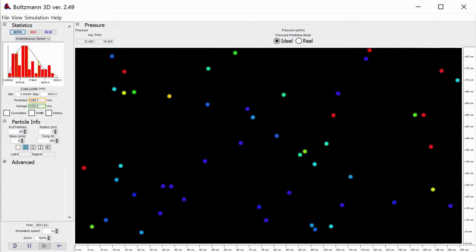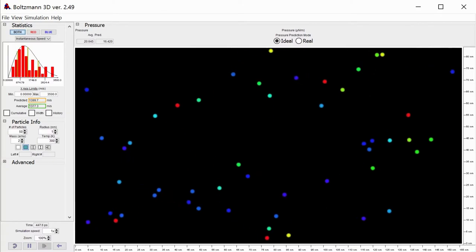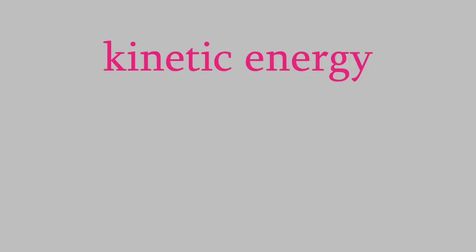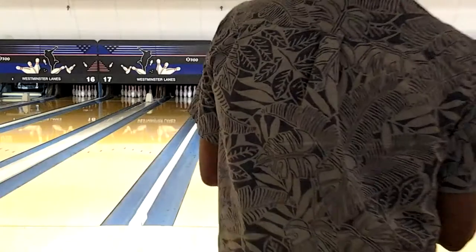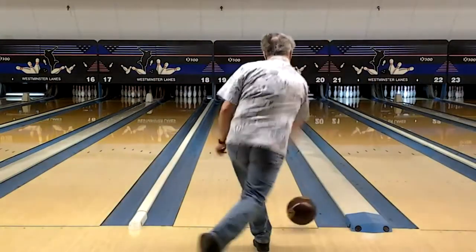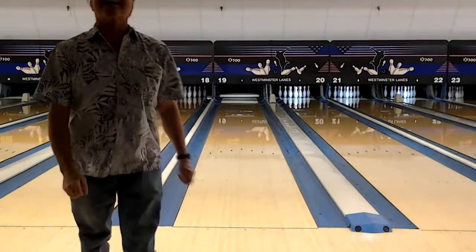Let's be a little more specific about what exactly kinetic energy is. It turns out that there are two things that determine how much kinetic energy an object has. First is how fast it's going — that makes sense. The faster it's moving, the more energy it has. The second thing that matters is how heavy the object is, its mass. The heavier an object is, the more energy it has. A bowling ball moving down a bowling alley can knock over pins, but a ping pong ball moving at the same speed couldn't do that because it weighs so much less.